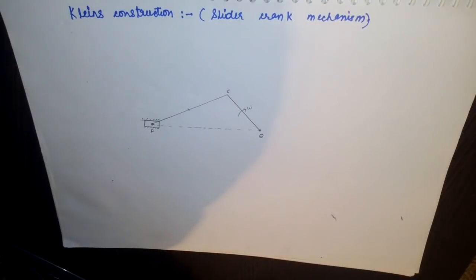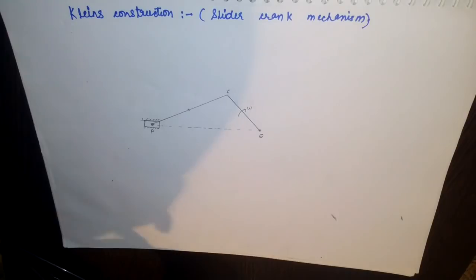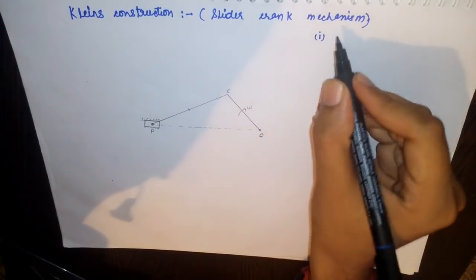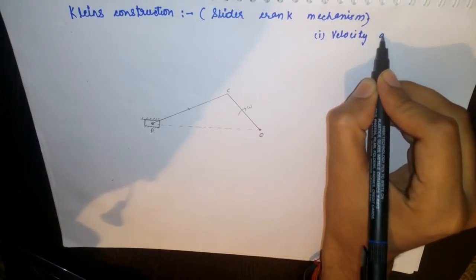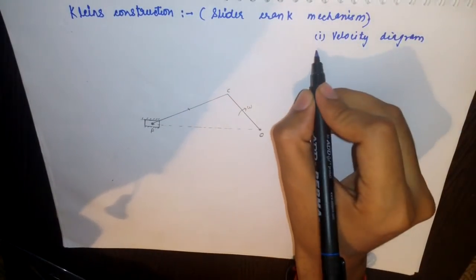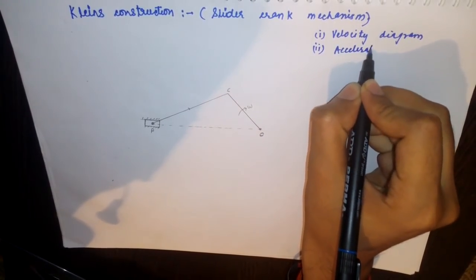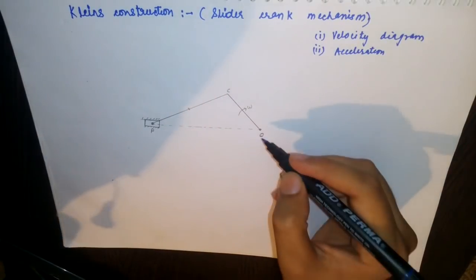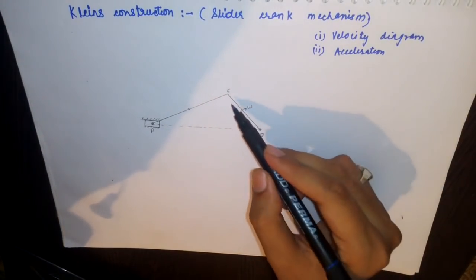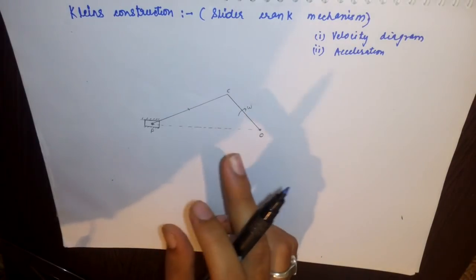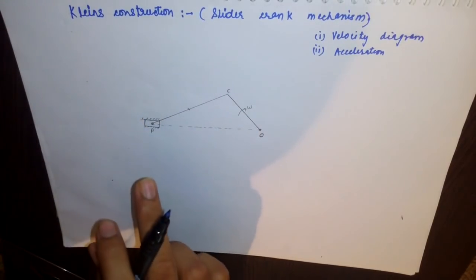In this video we will study Kleene's construction of slider crank mechanism. Kleene's construction is used to find two things: the velocity of all the links, and the acceleration of all the links. This is our slider crank mechanism — OC is a crank and PC is the connecting rod — and we have to find the velocity and acceleration of all the things using Kleene's construction.